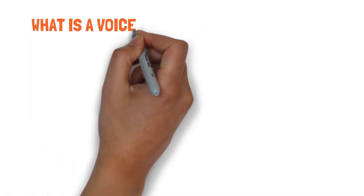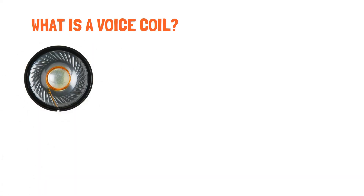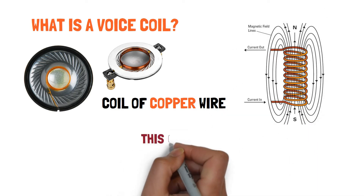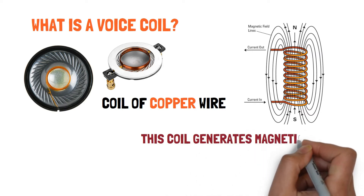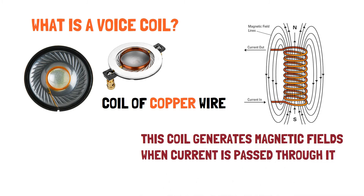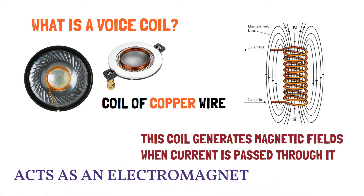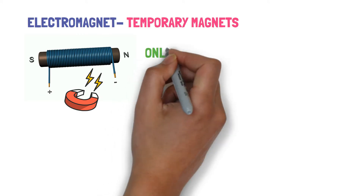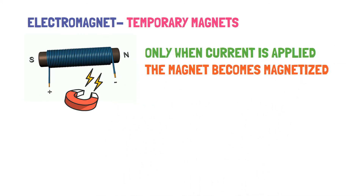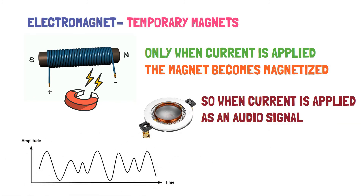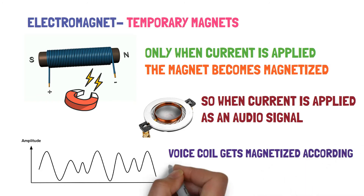What is a voice coil? A voice coil is a coil of copper wire which generates magnetic fields when current is passed through it. The voice coil is special because it can change the intensity of the magnetic field on the fly, meaning the magnetic fields it produces are in accordance with the audio signal passed onto it — this is how the voice coil behaves as an electromagnet.